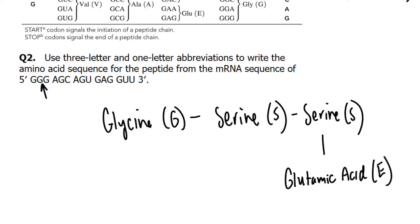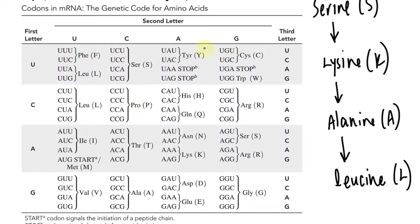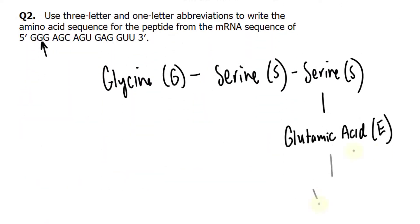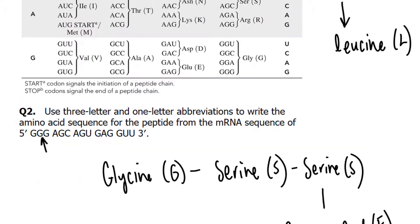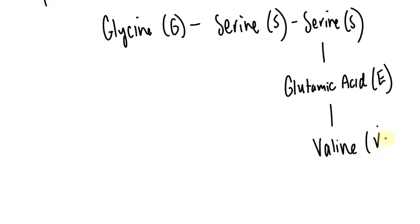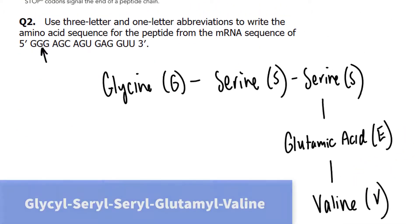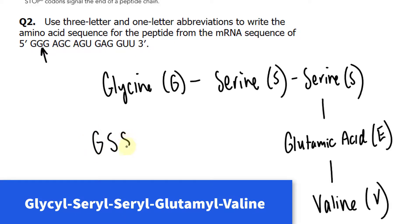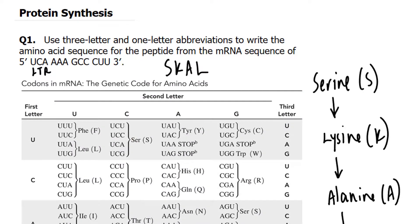Lastly we have GUU — G, U, and U. This whole block is dedicated to valine, V-A-L-I-N-E, abbreviated V. So the final protein is G-S-S-E-V.